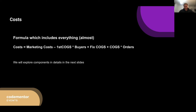For costs, when we talk about unit economics, the formula is: marketing costs, minus (first COGS × buyers), plus fixed COGS, plus (COGS × orders). It can be explained simply but should be calculated in as much detail as possible. The key is tracking cost of goods sold, because every sale — physical or virtual — costs you something.